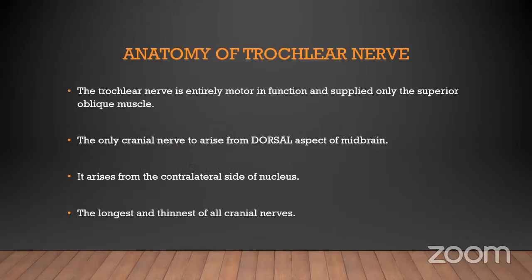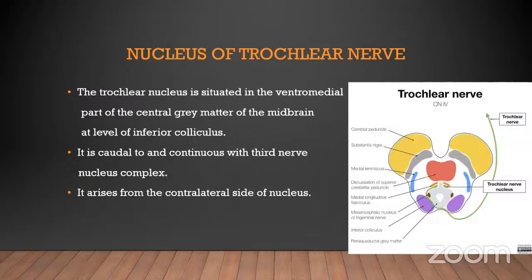The anatomy of the trochlear nerve: the trochlear nerve is entirely motor in function and supplies only the superior oblique muscle. The nerve arises from the dorsal side of the midbrain from the contralateral side of the nucleus — it is the longest and thinnest cranial nerve. The trochlear nucleus is situated in the ventromedial part of the gray matter at the level of the inferior colliculus, continuous with the third cranial nucleus complex.